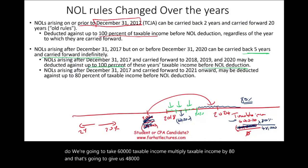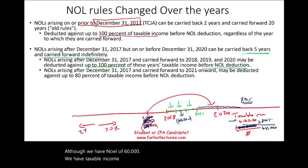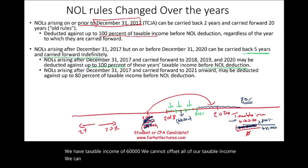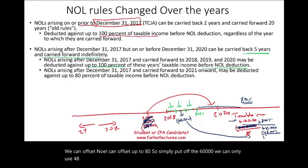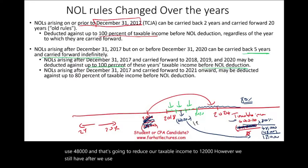Although we have an NOL of $60,000 and taxable income of $60,000, we cannot offset all of it. The NOL can only offset up to 80%, so of the $60,000, we can only use $48,000. That reduces our taxable income to $12,000. However, after using the $48,000, we still have $12,000 of NOL remaining to be used in the future.